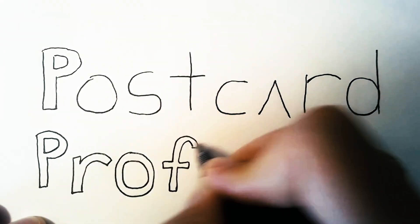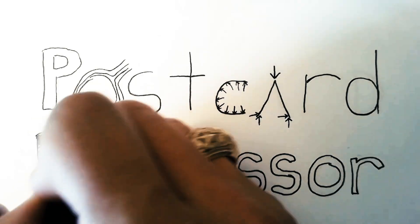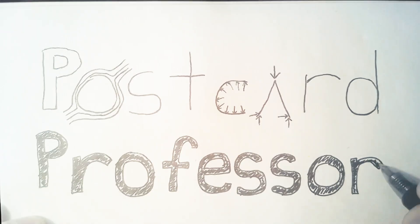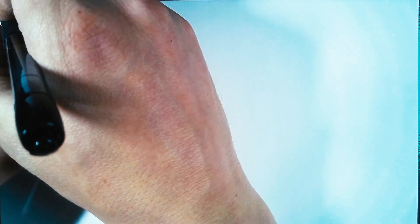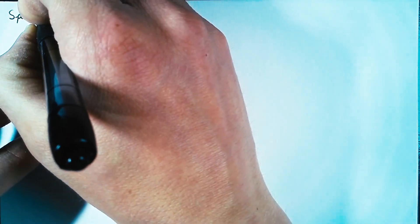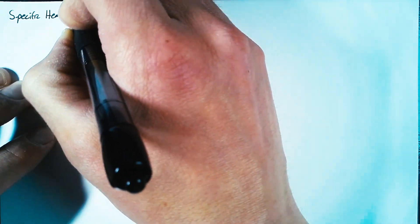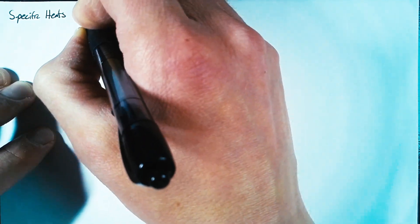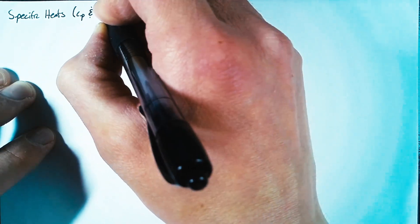Hello and welcome to The Postcard Professor, where we take complex ideas and explain them in the space of a postcard. In this video, we're going to be doing some work in order to derive our specific heats. There are going to be two of them that we're looking at: the specific heat at constant pressure and the specific heat at constant volume.